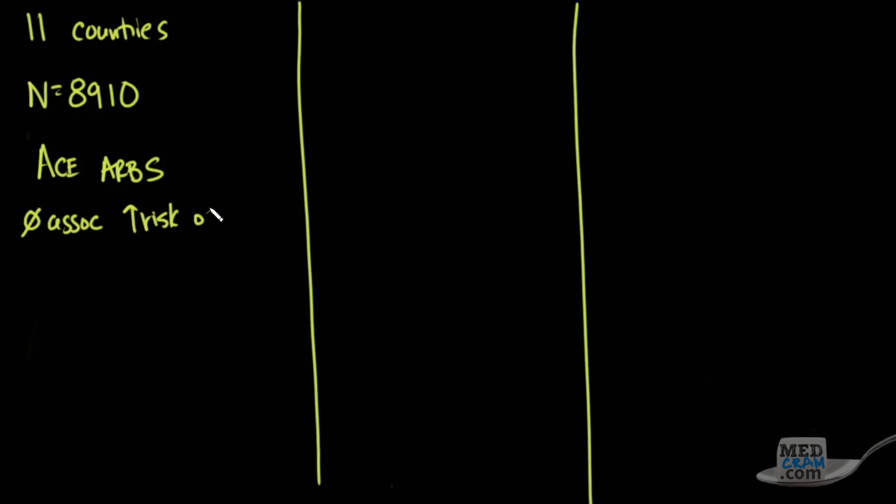All of these are observational studies, so there's a lot of confounders. But the first one looked at patients in 11 countries, and the number was 8,910 subjects. In that study, they found that for ACE and ARBs, when they did the analysis, there was no association with increased risk of death. They did another association and found that even in those who had hypertension, there was no increased risk of death.